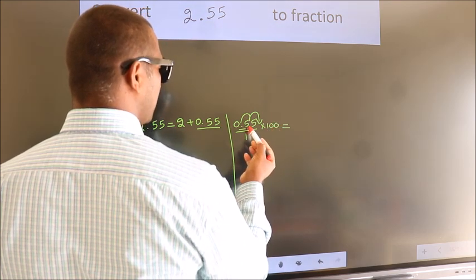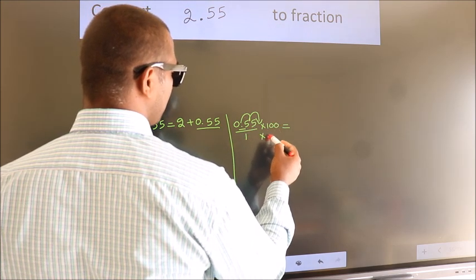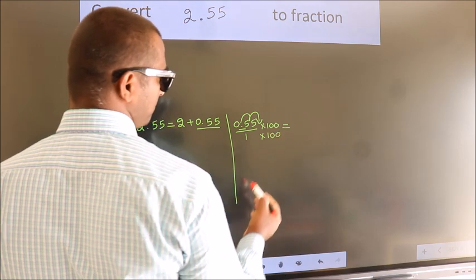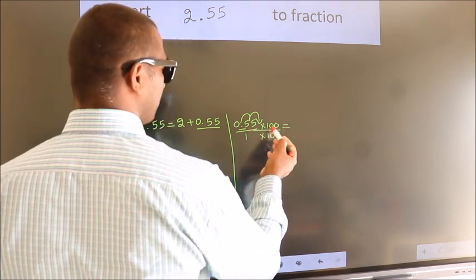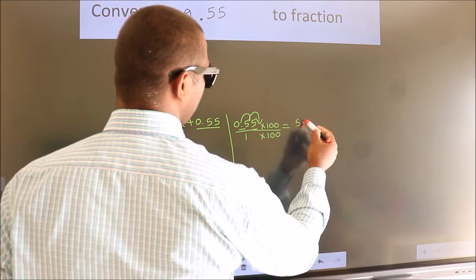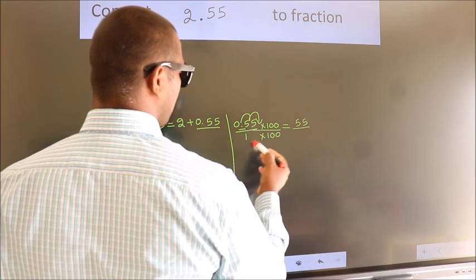Whatever we are multiplying in the numerator, in the denominator, do the same. Next, 0.55 into 100 is 55, 1 into 100.